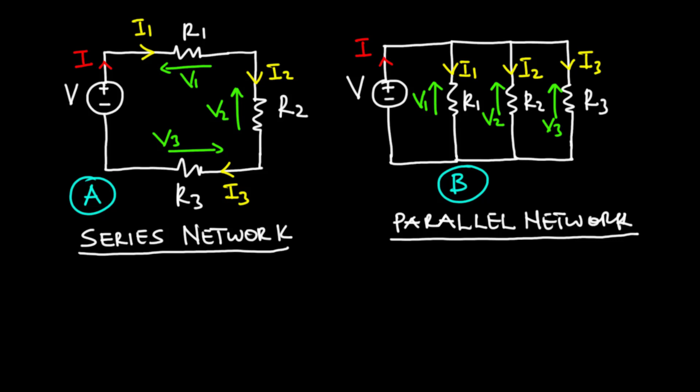So now, we have two different circuits facing us: Circuit A and B. Circuit A is a series network and circuit B is a parallel network. So why do we say circuit A is a series network and B is a parallel network? Circuit A is a series network because the current supplied by the voltage source is the same through each of the resistors, irrespective of the magnitude of their resistors.